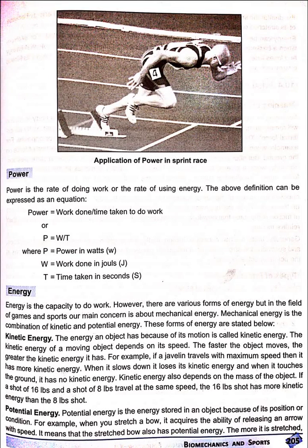Power is the rate of doing work or the rate of using energy. The above definition can be expressed as an equation: power is equal to work done upon time taken to do work, or P = W/T, where P (power) is in watts, W (work) is in joules, and T (time) is in seconds.